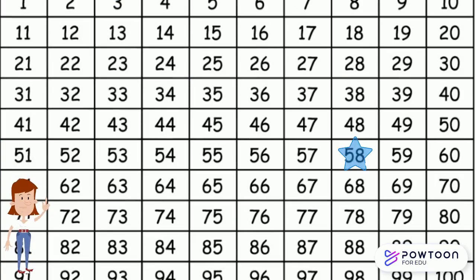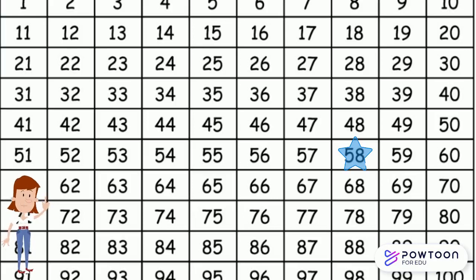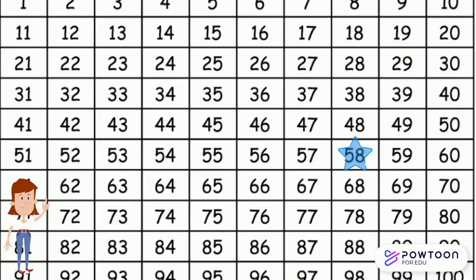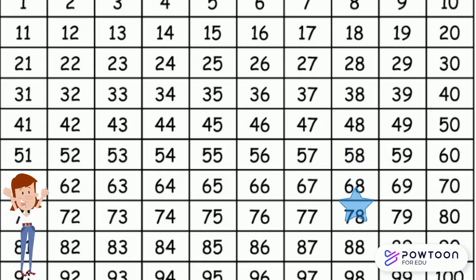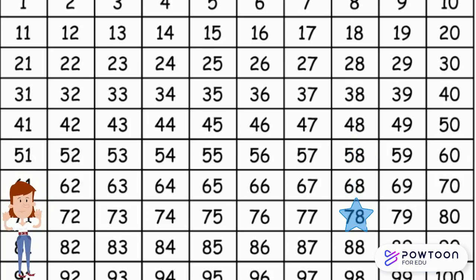Let's check and see if you understand the strategy. Let's start at 58 and add 20. Which way did you go — up or down? And how many hops did you go in that direction? If you went down and took two hops and landed on 78, then you got it. Good job.